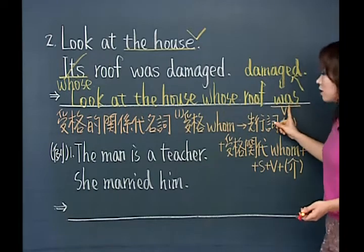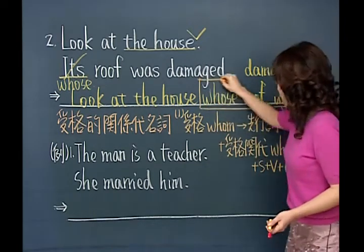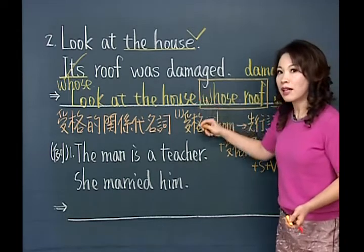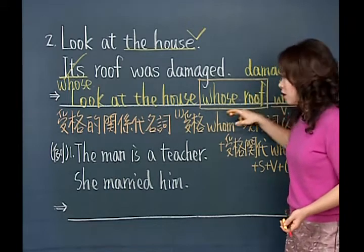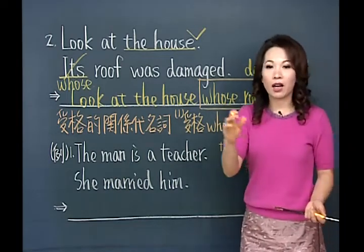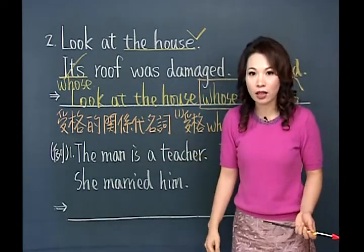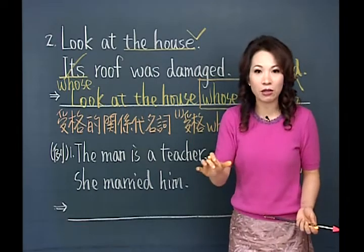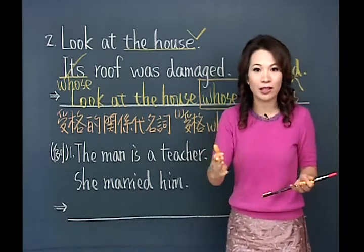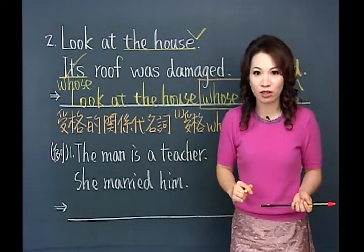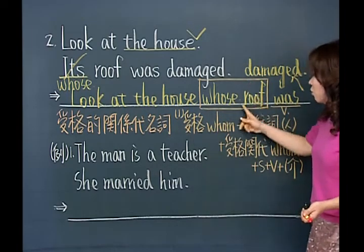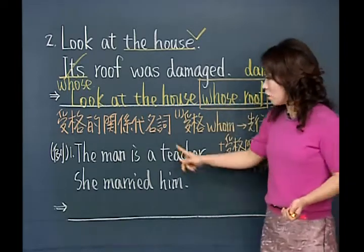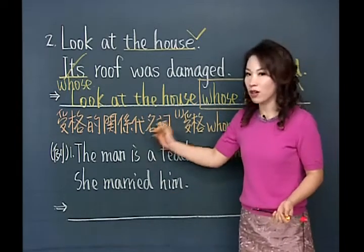有的同学说老师这里的roof是主词、was是动词，所以前面用受格关带？不对，因为这整个whose roof才是主词，不是单纯的roof是主词。就像my car is over there，主词是my car而不只是car。所以这里的主词是whose roof整体，一定要用whose，而不是受格关带。这个重点我们等一下跟受格关带做比较。